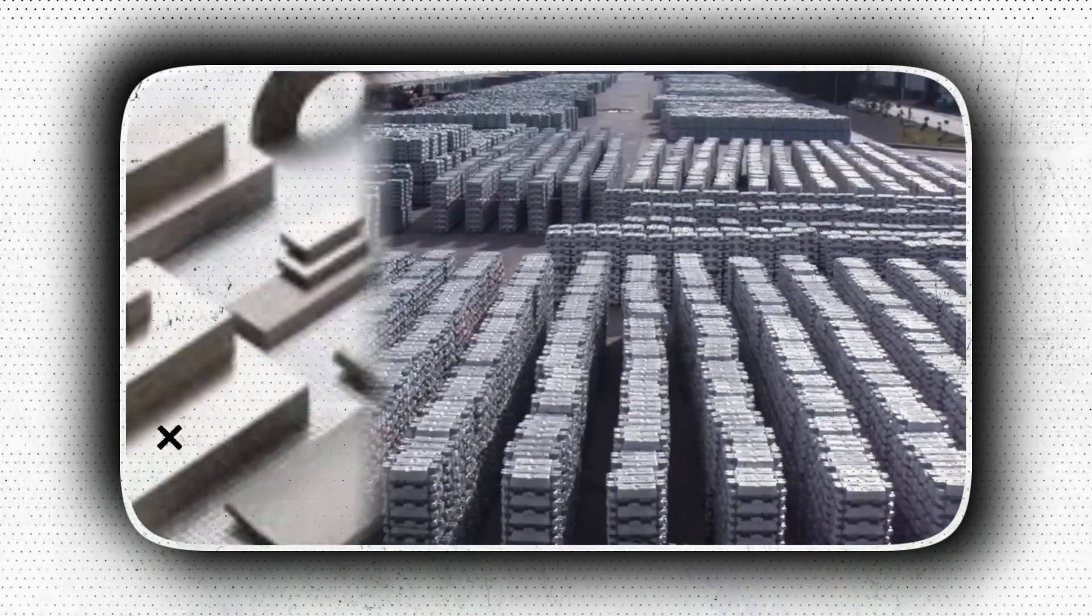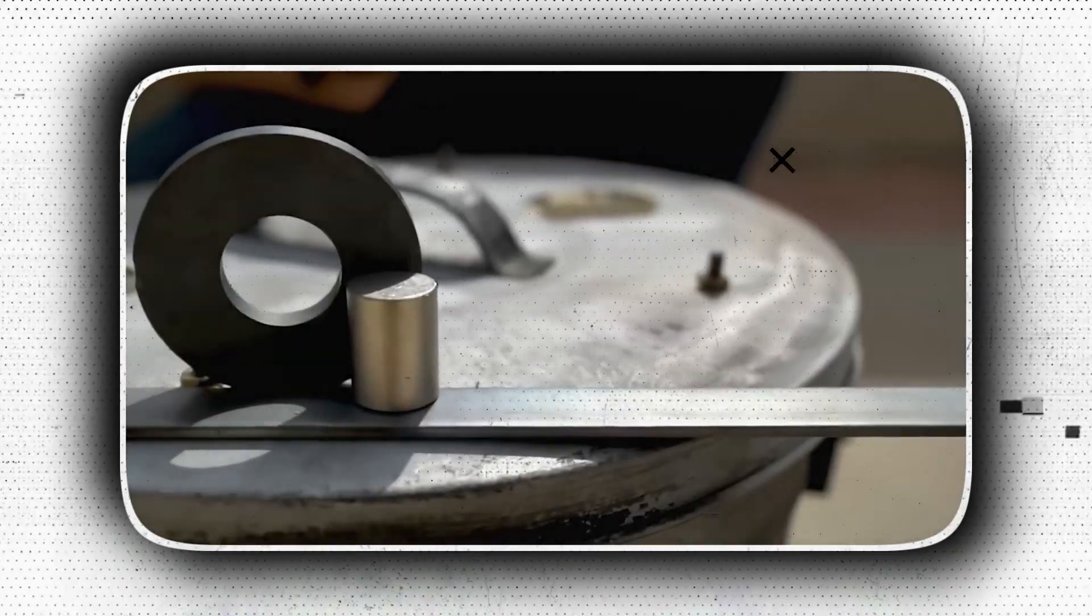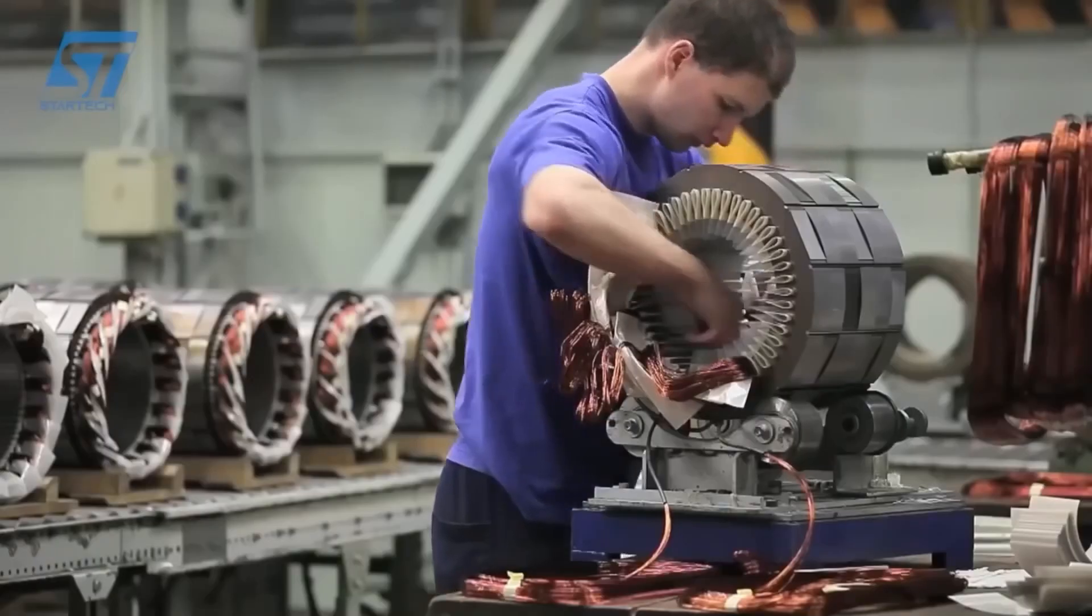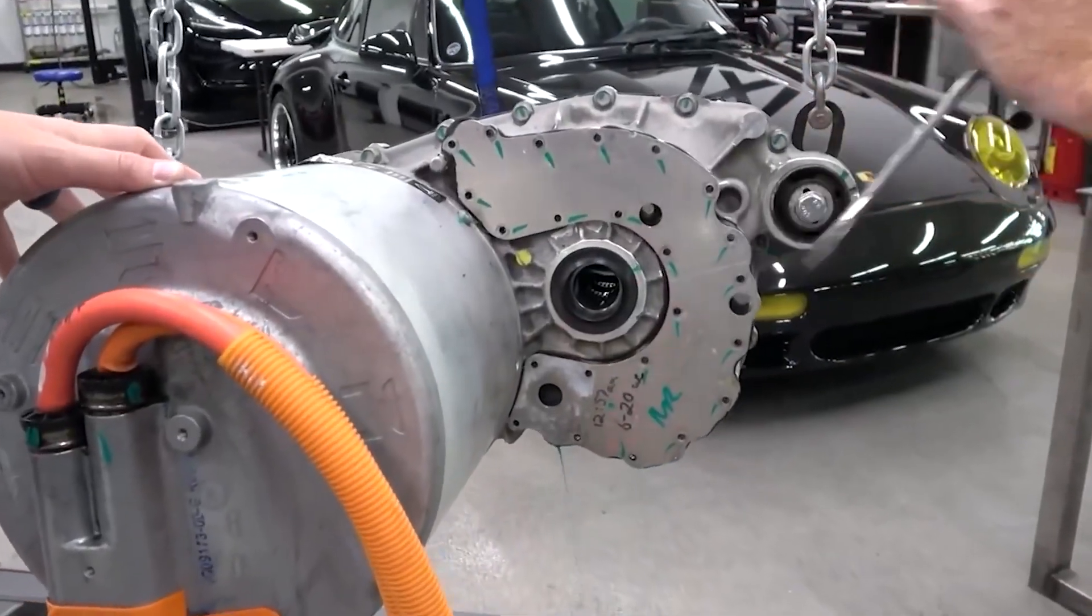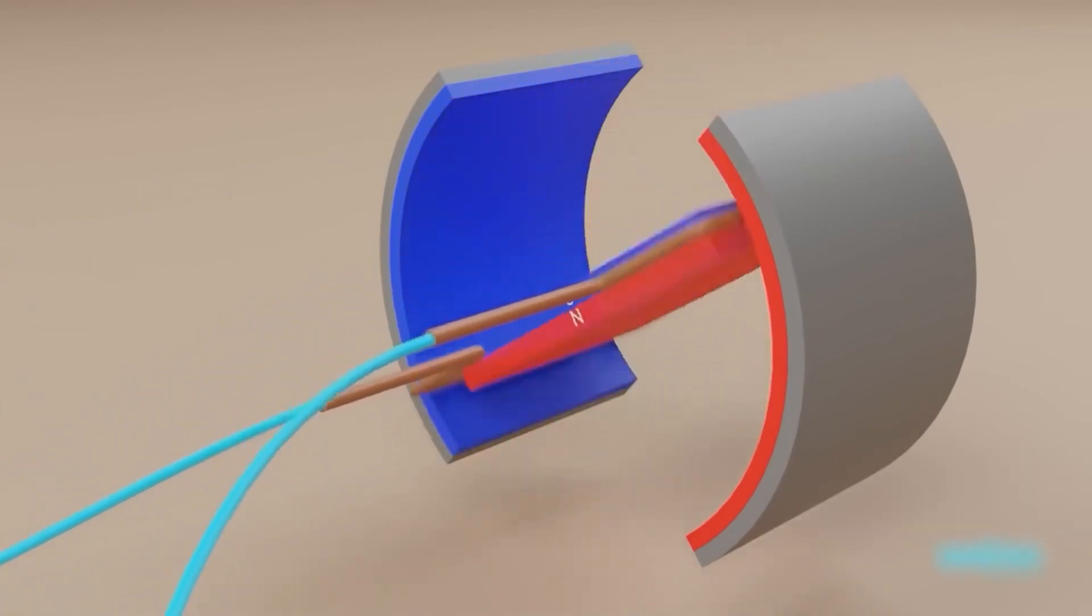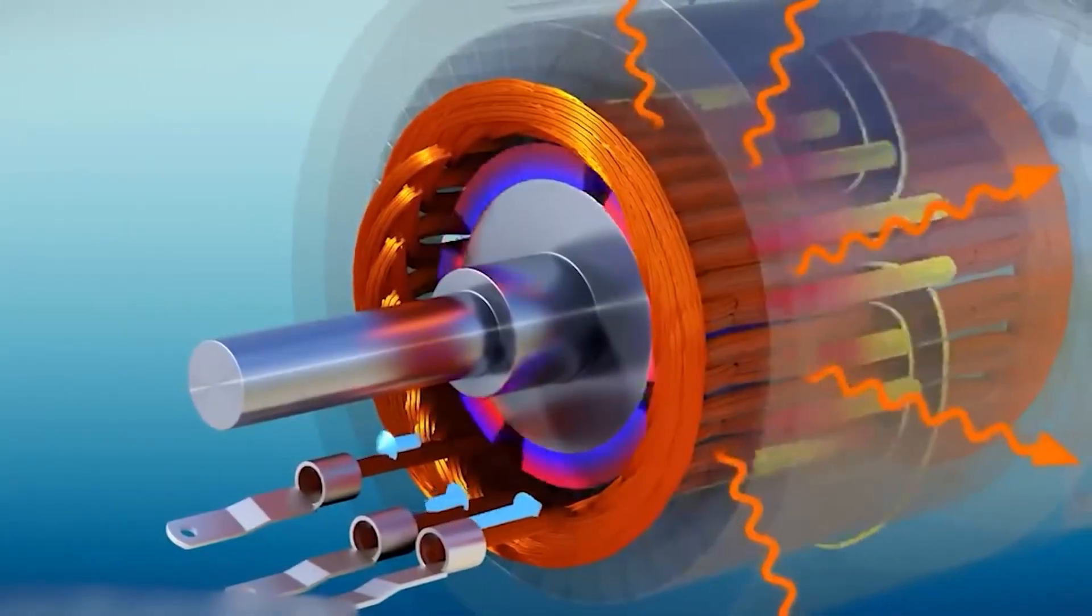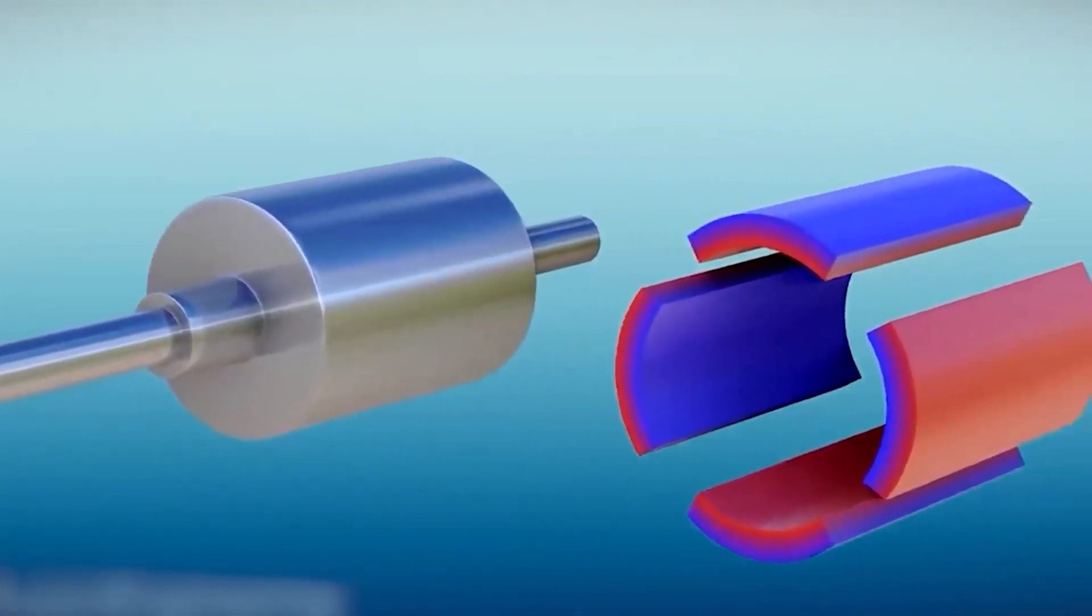There are various motor designs, including the AC induction motors Tesla favors in its Model S and Model X, or the current excited motors being developed by several manufacturers for the next generation of EVs. Audi is taking this route for its e-tron and e-tron Quattro models.